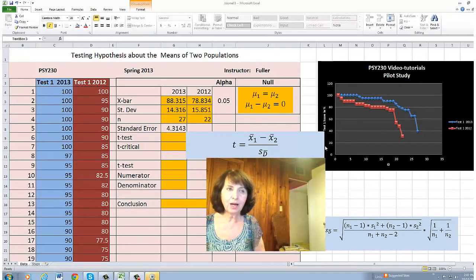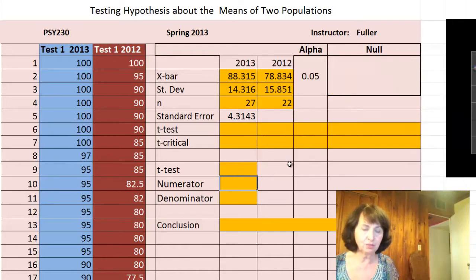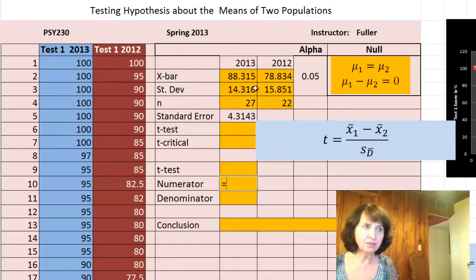Next step, I would like to calculate the t-test for these two samples. First, I have a numerator in this formula, so let's first calculate the numerator. This numerator is the difference between the mean of the first sample and the mean of the second sample.